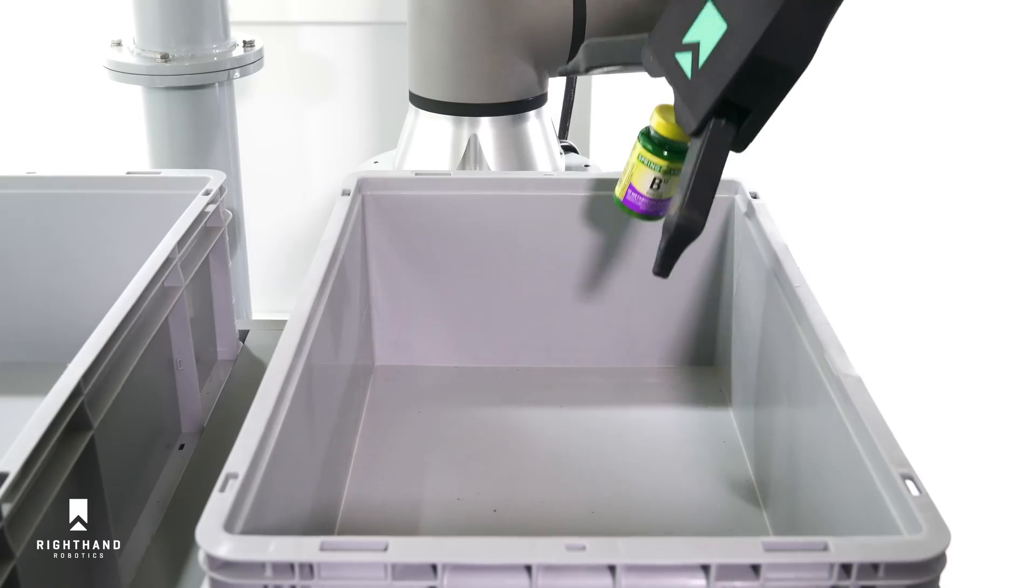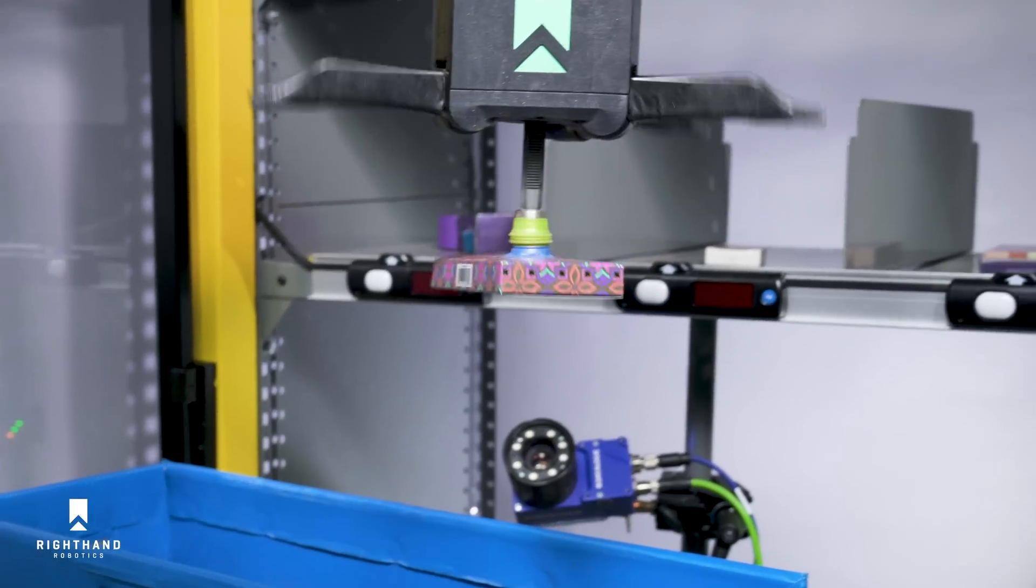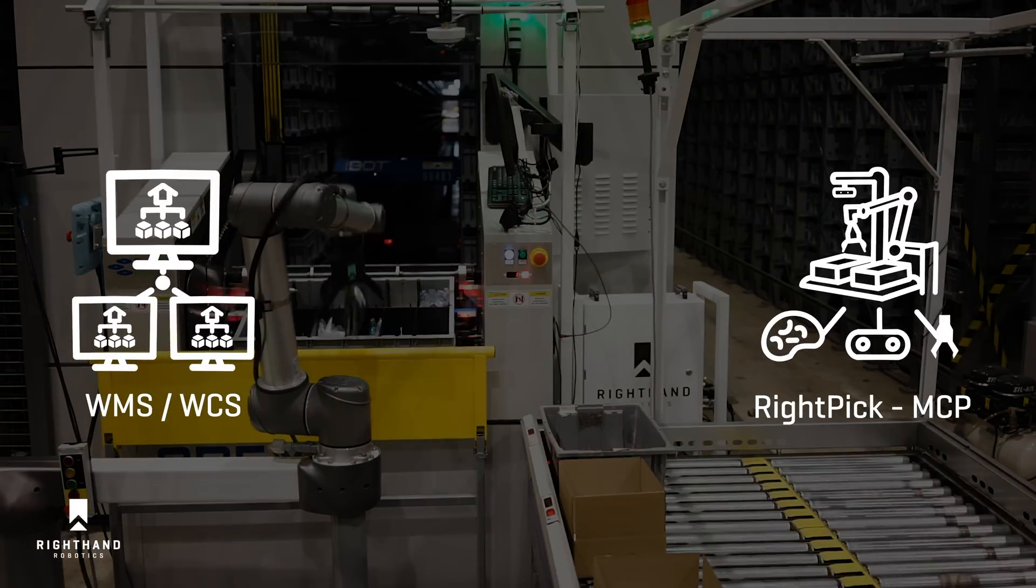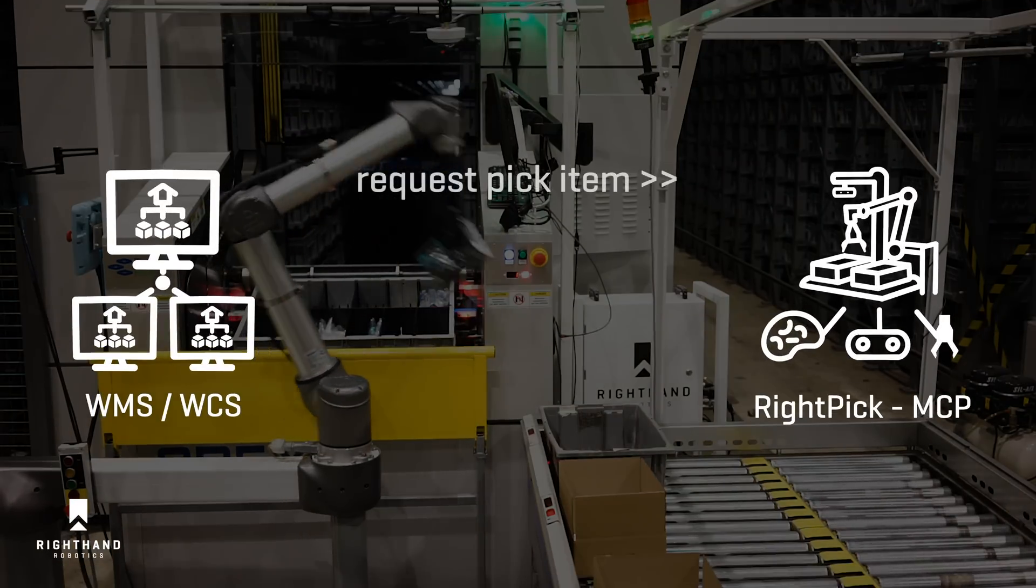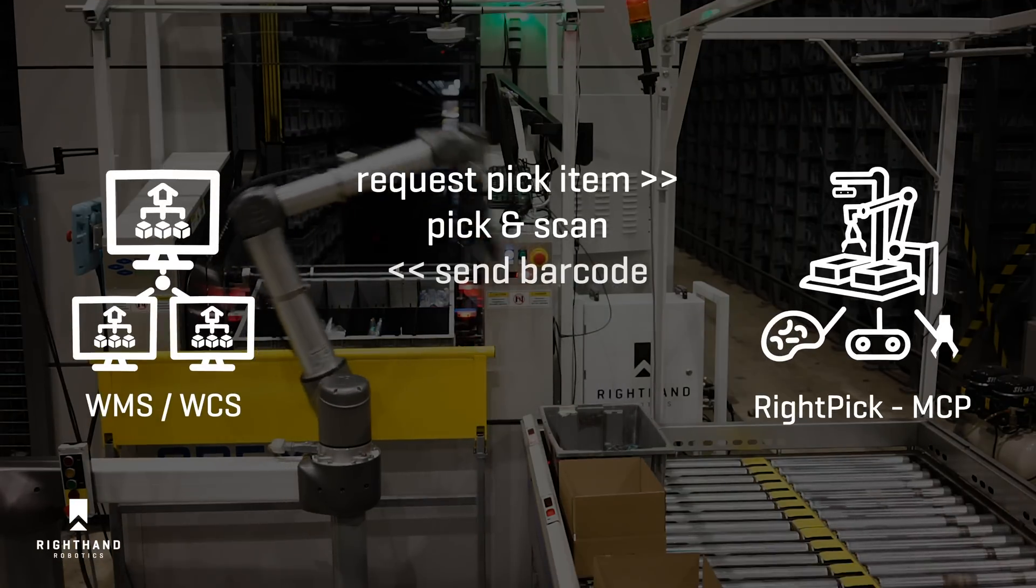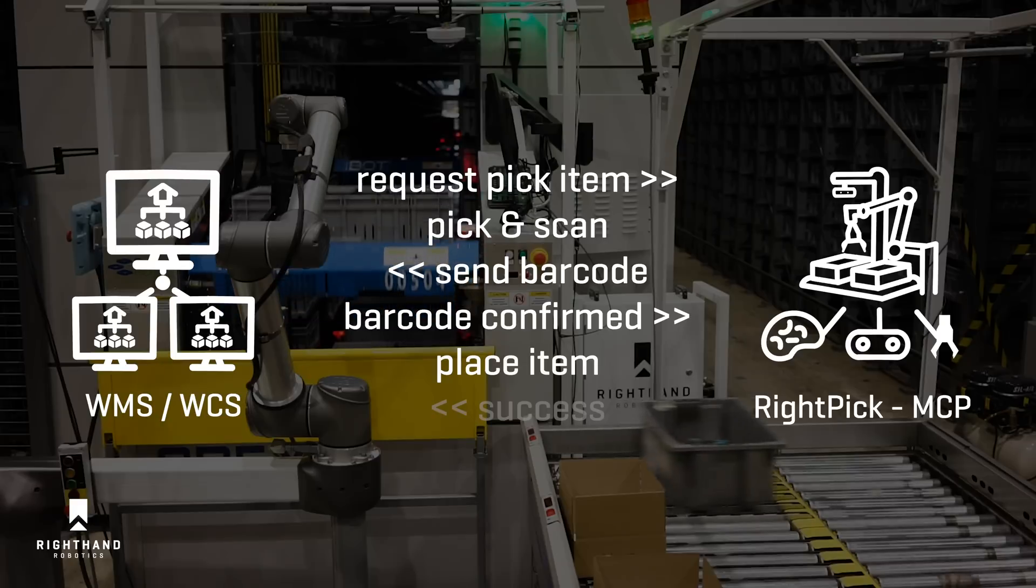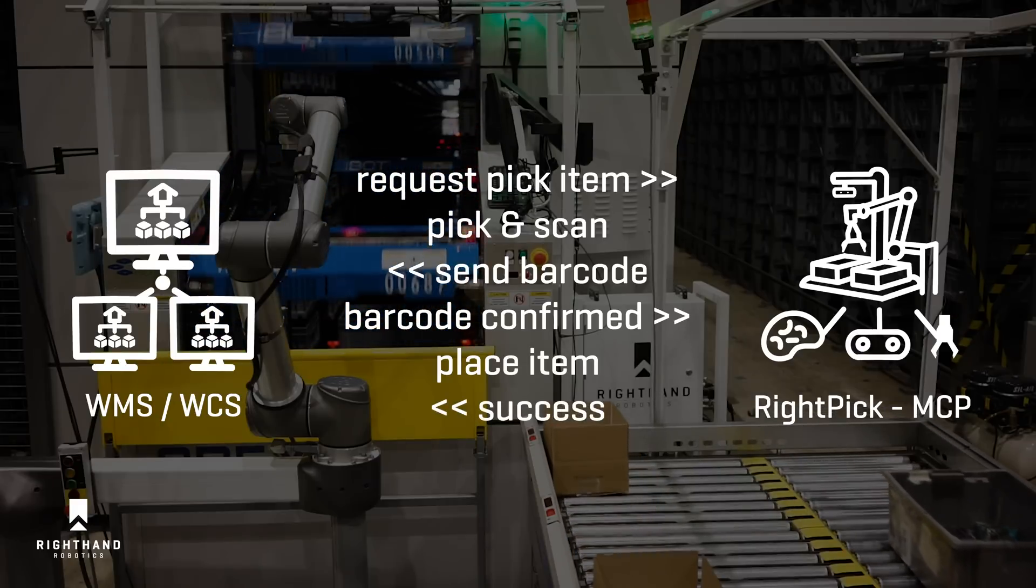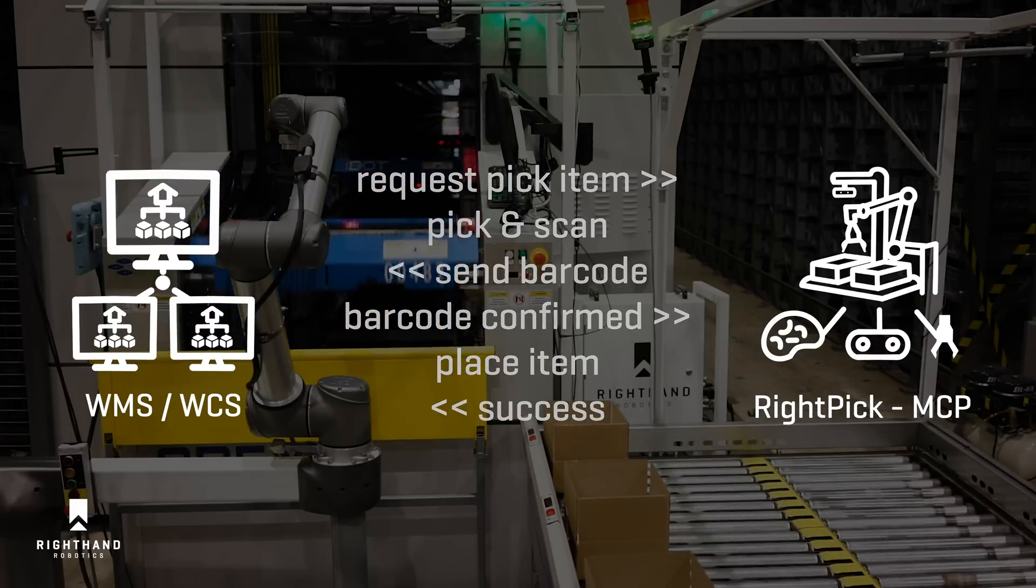RightPick captures barcodes and integrates with the widest range of new and existing material handling systems via RightPick MCP, an industry-first standard software API for robotic piece-picking systems.